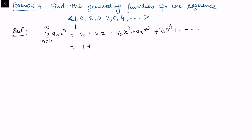Reading off the sequence: a₀ = 1, a₁ = 0, a₂ = 2, a₃ = 0, a₄ = 3, a₅ = 0. So we have 1 times x⁰, 0 times x, 2 times x², 0 times x³.